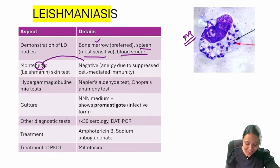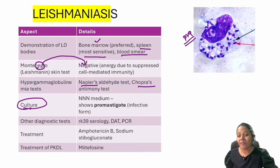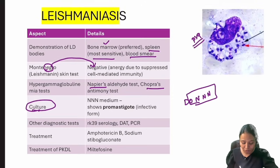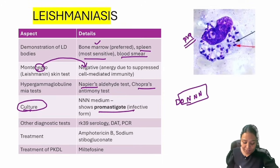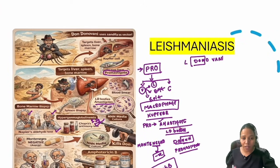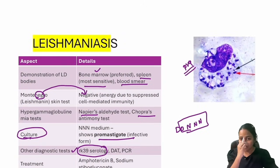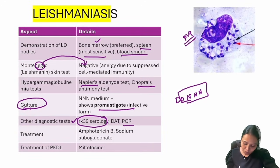Montenegro test is negative due to suppressed cell-mediated immunity. Hypergammaglobulinemia is detected by Napier's and Chopra's tests. Culture uses NNN (Triple N) media and shows the promastigote form. Other diagnostic tests include RK39 antigen test and PCR.